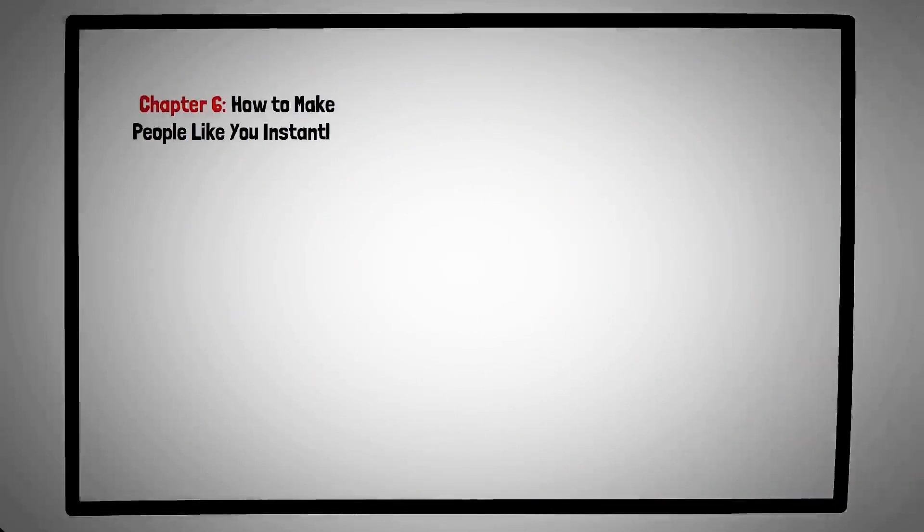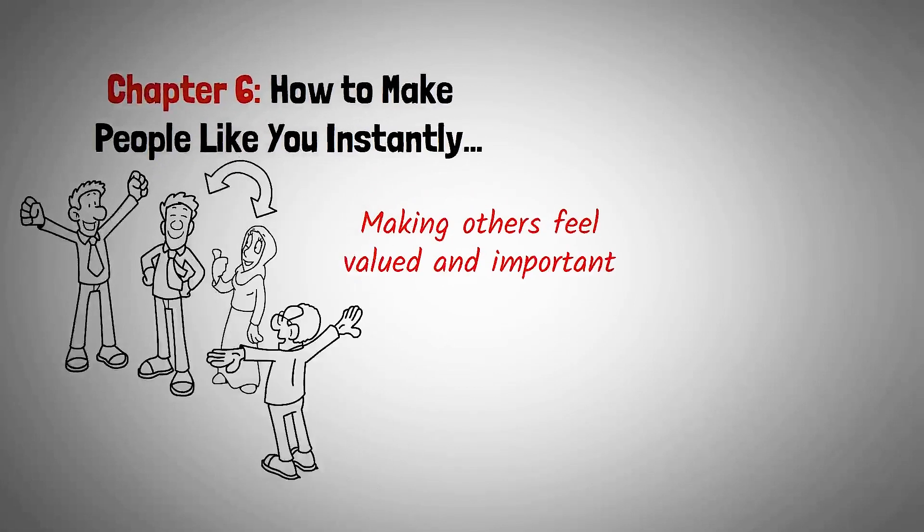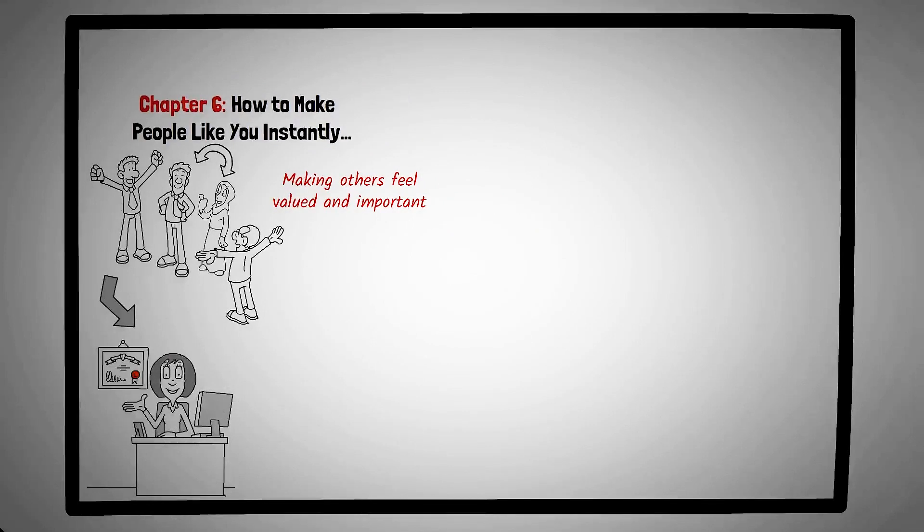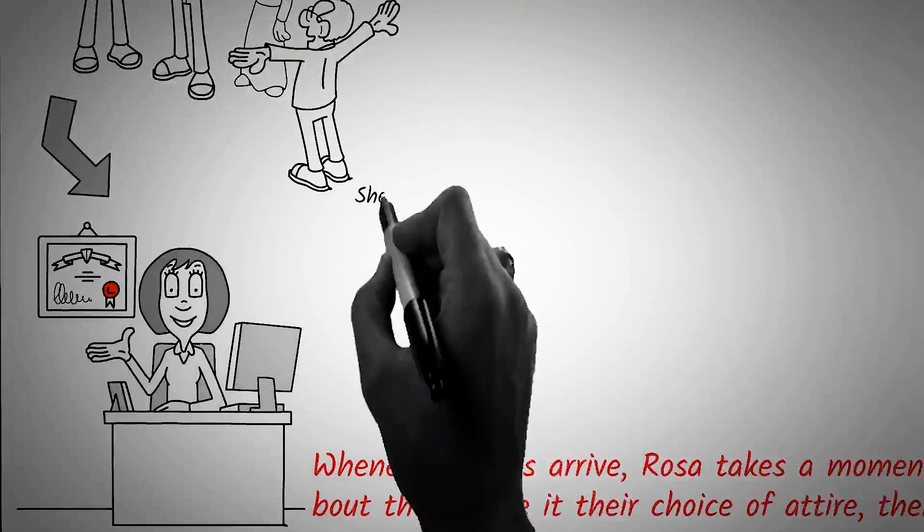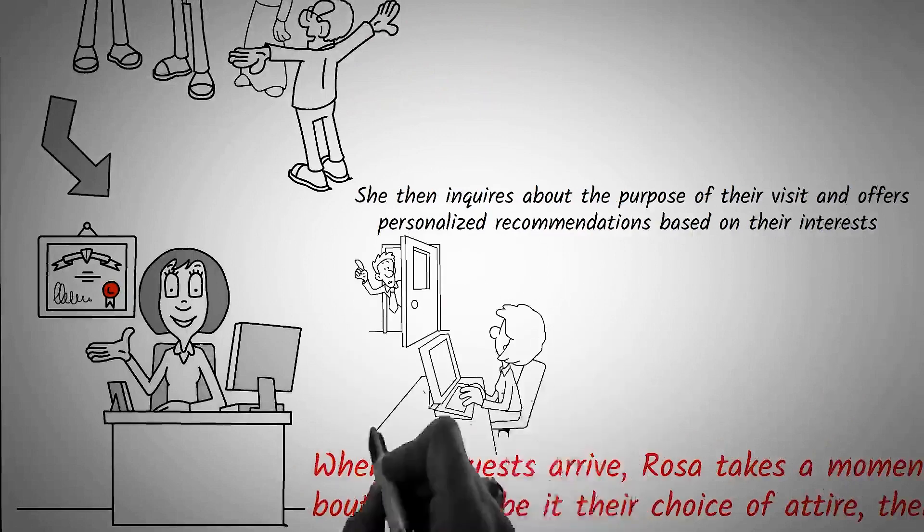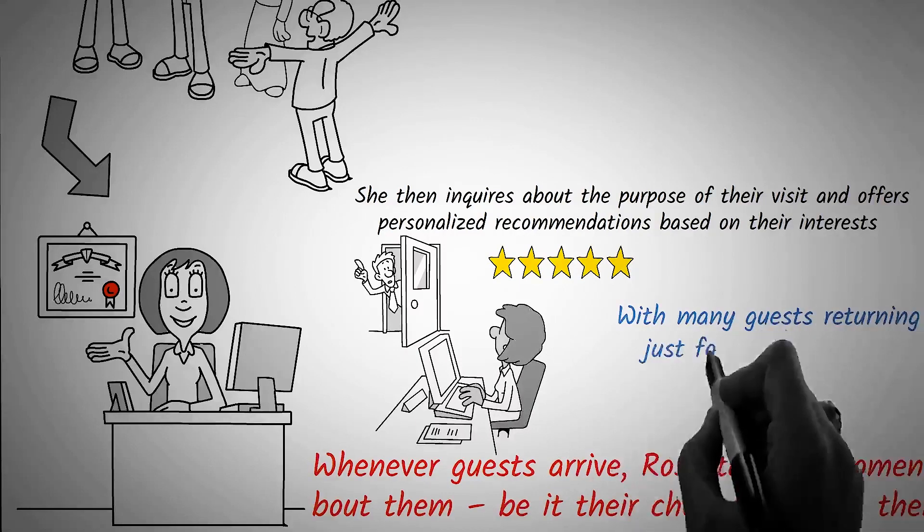Chapter six, how to make people like you instantly. In the intricate dance of human interactions, one principle stands out as universally effective: making others feel valued and important. This chapter delves into this timeless truth, emphasizing its pivotal role in forming instant connections and fostering mutual respect. Think of Rosa, a hotel receptionist in a bustling tourist city. While her job involves checking guests in and out, she has a unique approach that sets her apart. Whenever guests arrive, Rosa takes a moment to genuinely compliment something about them, be it their choice of attire, their travel accessories, or even their smile. She then inquires about the purpose of their visit, and offers personalized recommendations based on their interests. Guests often leave the reception with a smile, feeling recognized and important. Over time, the hotel receives numerous reviews, specifically mentioning Rosa's warm and personalized approach, with many guests returning just for the welcoming experience she offers.